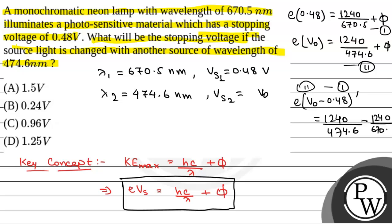So, on solving this, we will have e into Vs0 minus 0.48 is equal to 0.76 electron volt. So, we will have Vs0 minus 0.48 is equal to 0.76 volt. So, we will have Vs0 is equal to 1.24 volt, which is approximately equal to 1.25 volt.